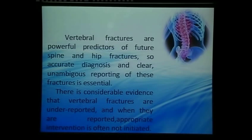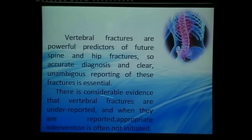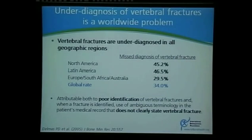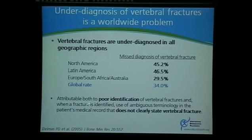Vertebral fracture is a powerful predictor of future fractures. If a patient has one vertebral fracture, they will likely have multiple vertebral fractures, and it will lead to fractures at other sites like the hip. There is considerable evidence that vertebral fractures are underreported, and when they are reported, no intervention happens. In North America, 45% go undiagnosed; in Europe, 30%. It's a common problem everywhere, and even more so in our area, mainly due to poor identification and ambiguous reporting.